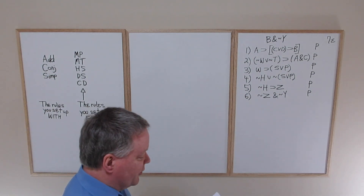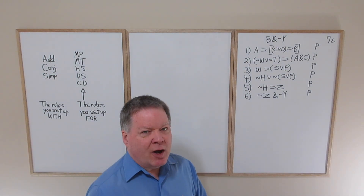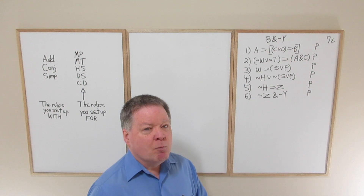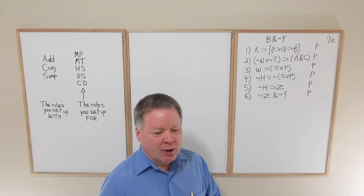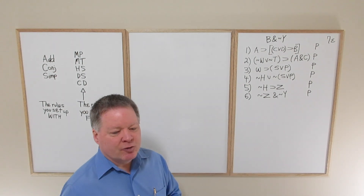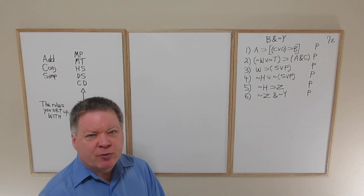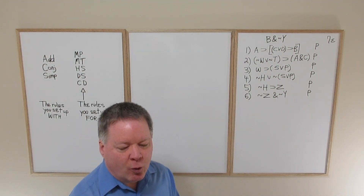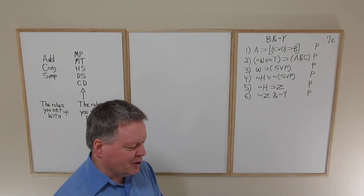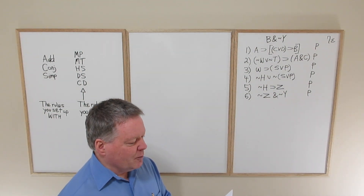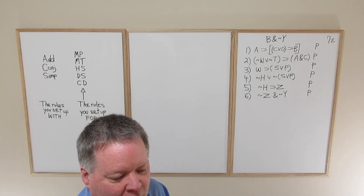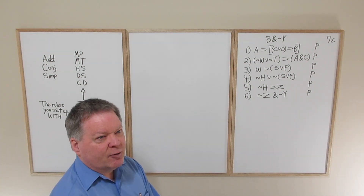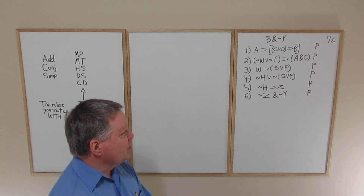We're now going to consider the questions in assignment six, question seven: construct proofs for the following more challenging problems. Before you start watching this, you should have already done the proof construction questions in assignment five, exercise two four, as well as the proof construction questions in the first part of assignment six, question six. The ones in question seven are still confining ourselves to the eight basic rules.